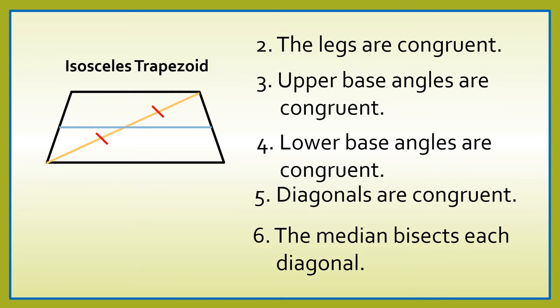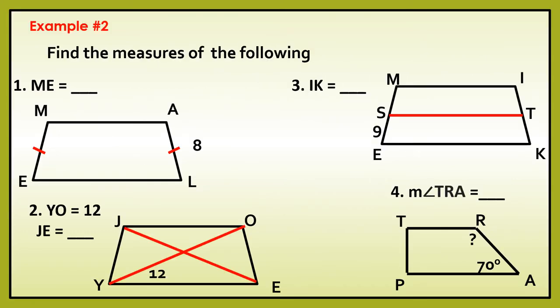Let us apply this to trapezoid UREMS. Example number 2, find the measure of the following. Number 1, find the measure of ME. Since ang AL natin dito ay 8, therefore, ang measure ng ME natin ay 8 because they are congruent. Number 2, ang YO natin is equal to 12. This is diagonal YO. What is the measure of JE? Ang JE natin is also a diagonal. So, sabi dun sa theorem, diagonals of a trapezoid are congruent. Therefore, kung si YO natin ay 12, automatically, si JE natin is also 12.